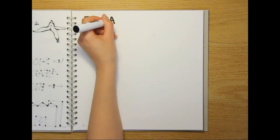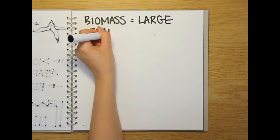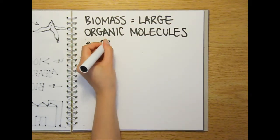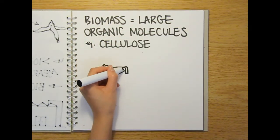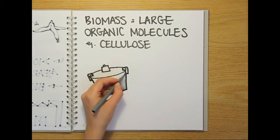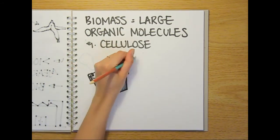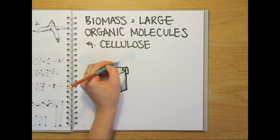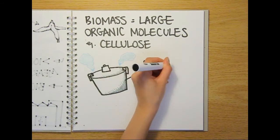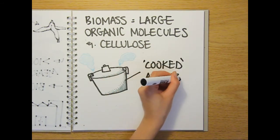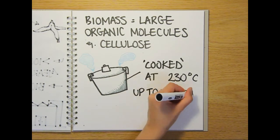When the biomass arrives at the plant, it's a mixture of large and complex organic molecules like cellulose that are hard to break down. In order to feed it to the microbes that will produce the hydrogen, the complex molecules must first be broken down into simpler sugars. One of the ways to do this is to cook it with water at about 230 degrees C under pressures up to 60 times atmospheric pressure.